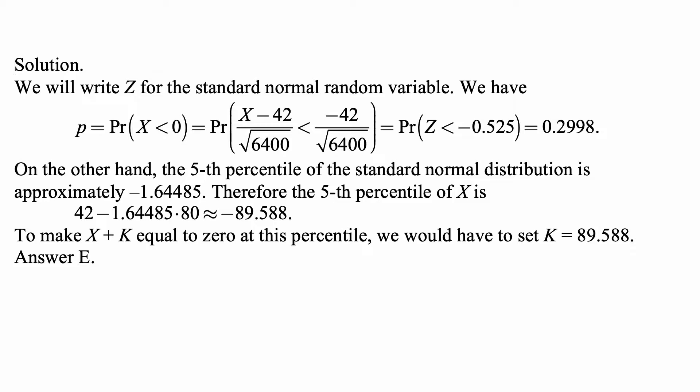Square root of 6400 is the standard deviation of X, because the variance is 6400. And that's less than negative 42, because 0 minus 42 is negative 42, divided by square root of 6400.